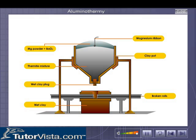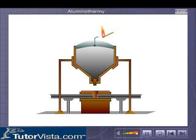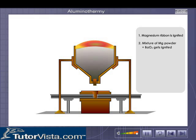Shown here is the setup used for welding iron girders. The magnesium ribbon is first ignited. The mixture of magnesium powder and barium oxide gets ignited.